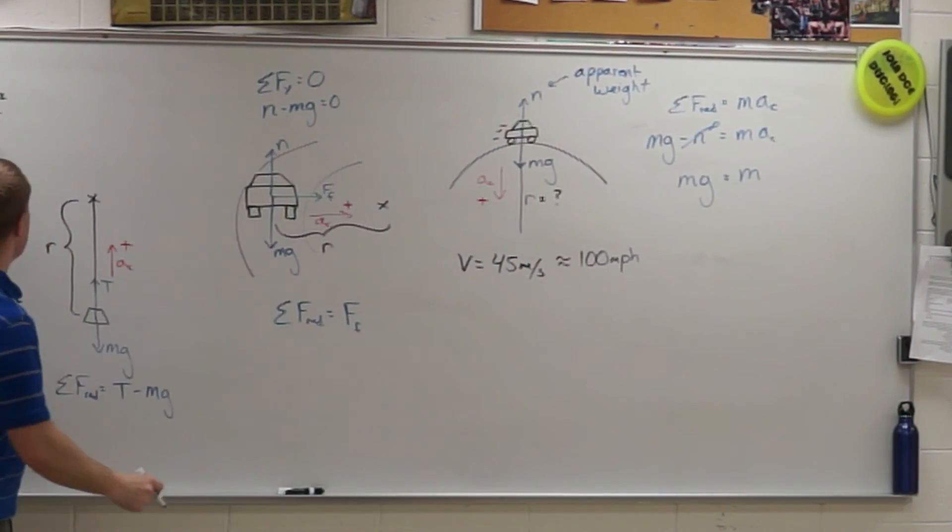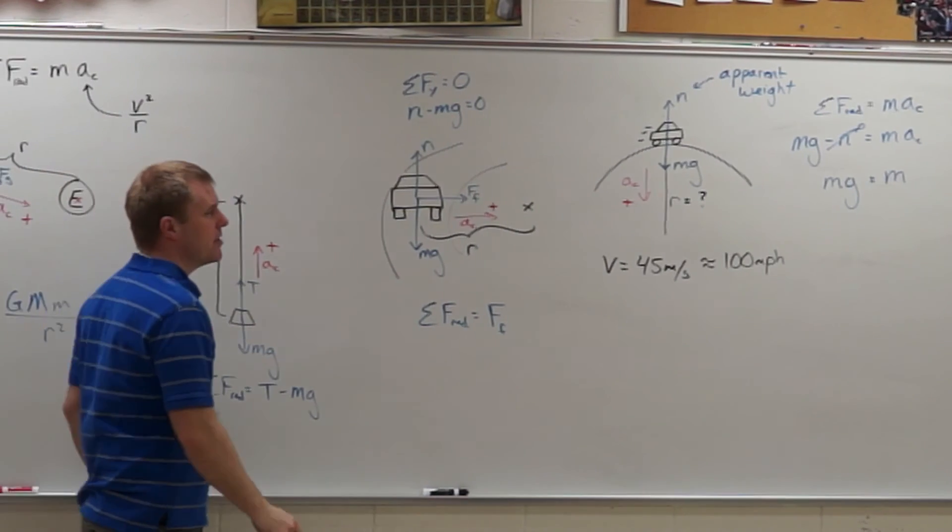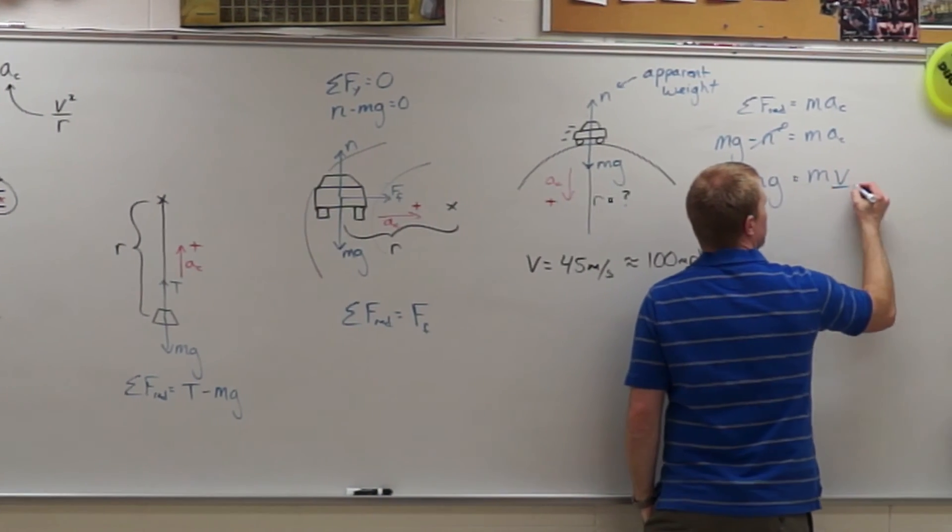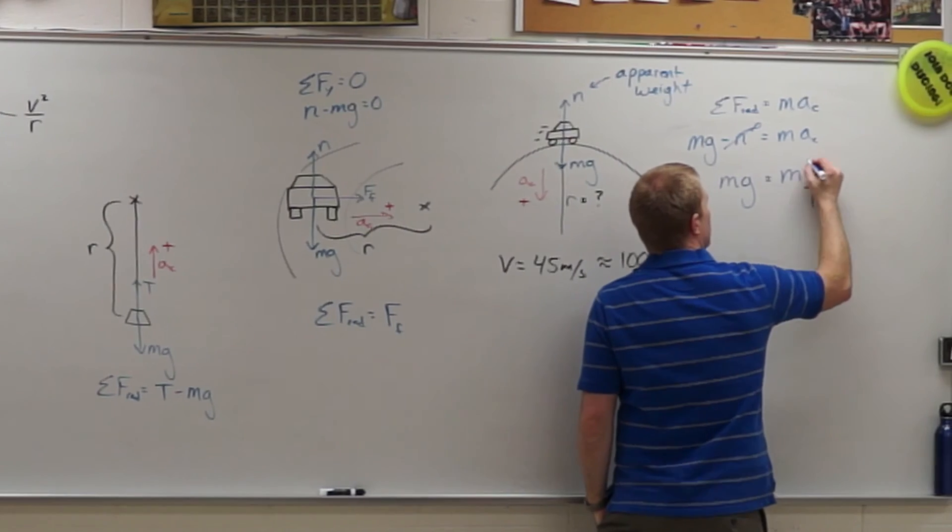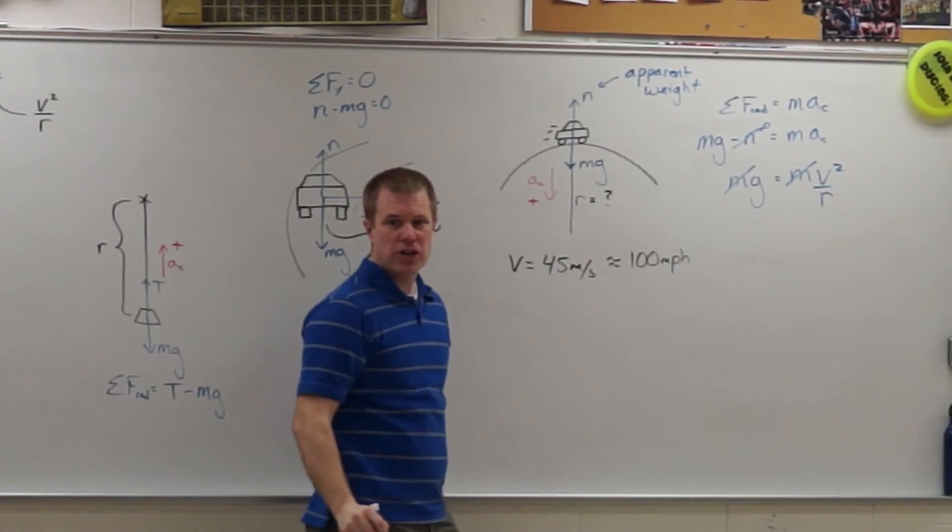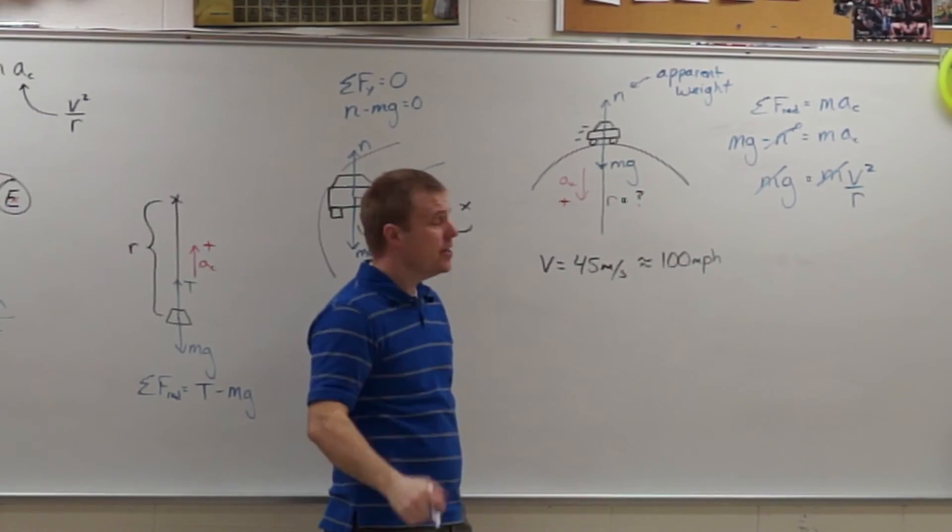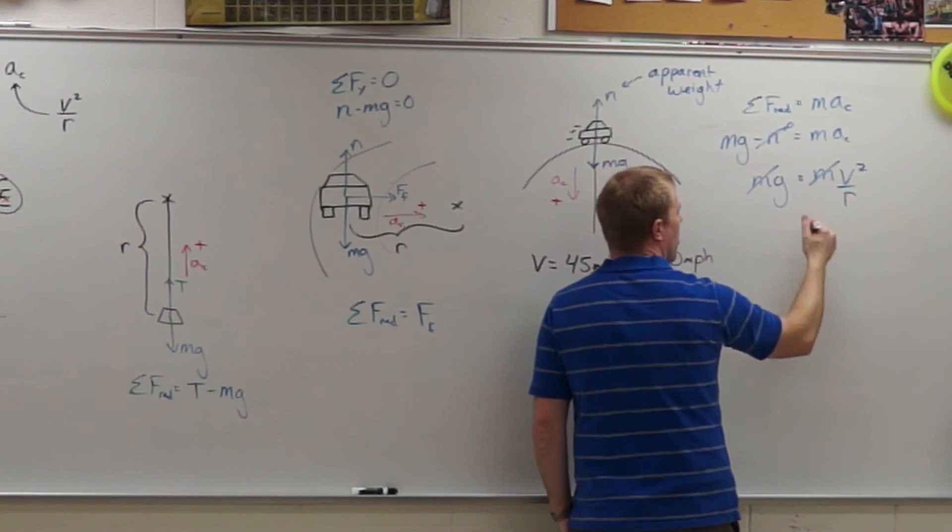And I'm going to make a substitution for Ac that it's the speed squared divided by the radius of curvature. And my m's cancel so it doesn't matter which car goes over my hill. And so we then solve for R.